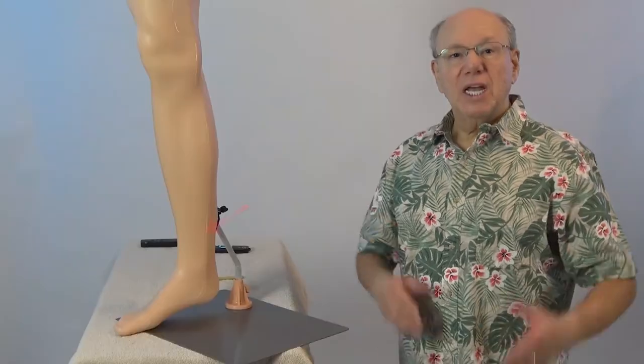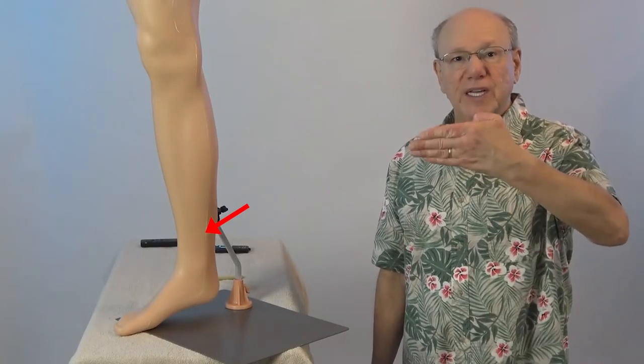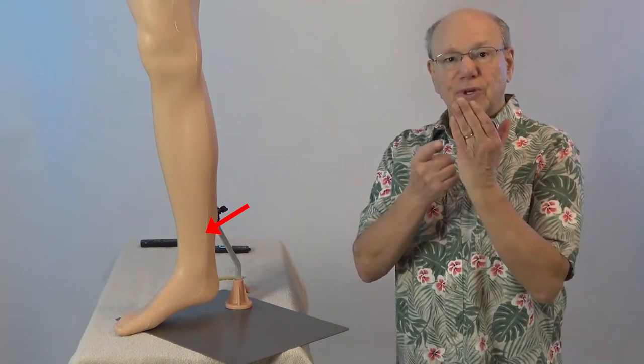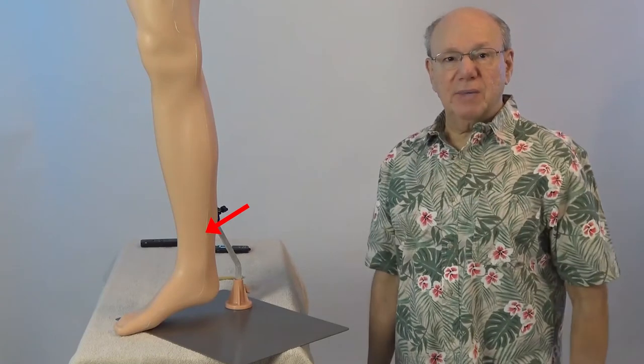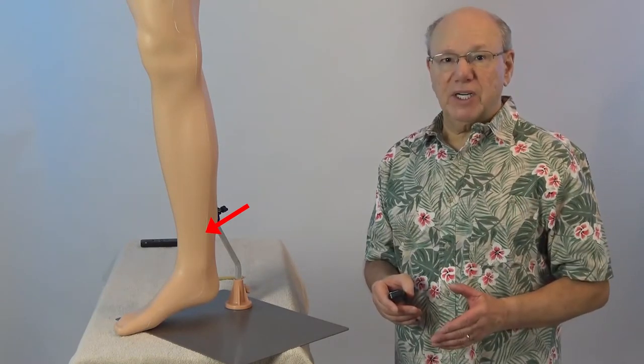This point is very calming and is said to treat the cause of insomnia. Spleen 6 is located on the inside of the leg the width of four fingers above the tip of the ankle bone. To locate Spleen 6, put the first joint of your pinky finger on the tip of your ankle bone, then find a spot that is just above your index finger.